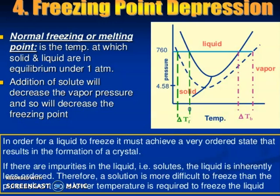The normal freezing point or melting point is the temperature at which solid and liquid are in equilibrium under one atmospheric pressure. One atmospheric pressure is very important — people don't remember this. Now, addition of solute will decrease the vapor pressure and so will decrease the freezing point. Depression in freezing point means decrease in freezing point.